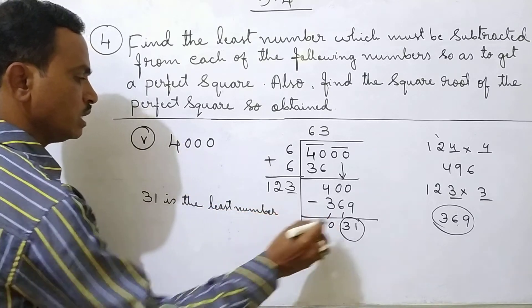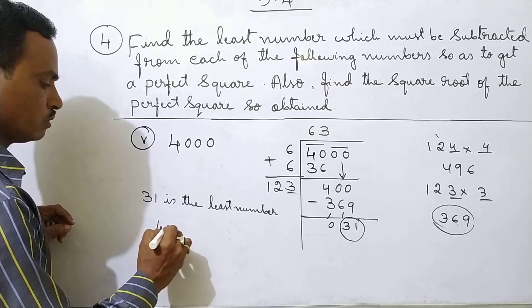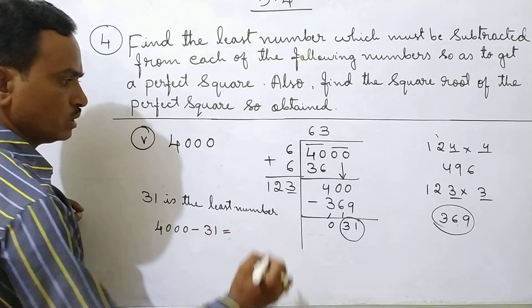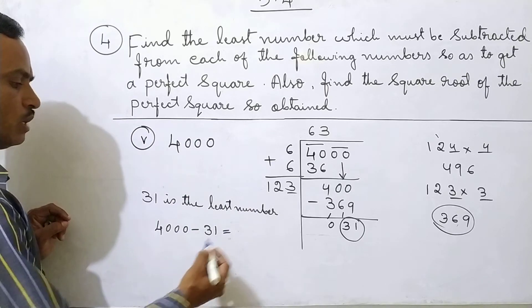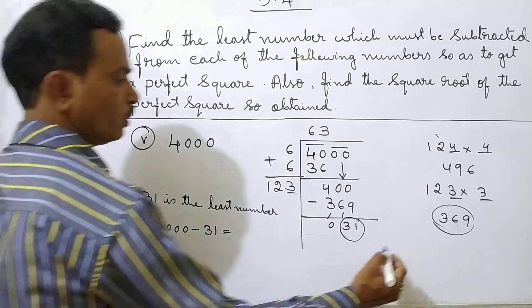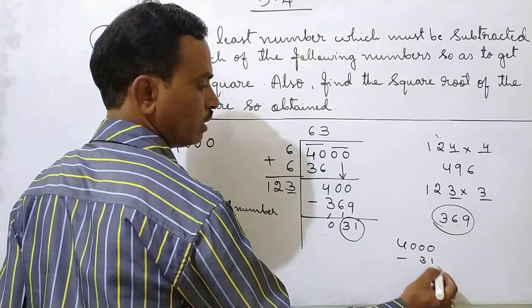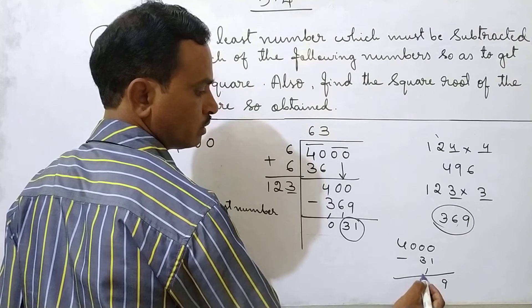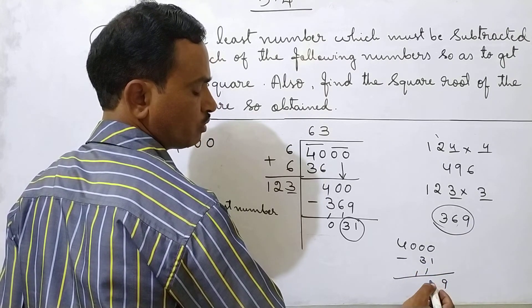So this least number you have to subtract from 4000. 4000. 4000 minus 31. So this is equal to. So what is the 4000 minus 31? We'll do 4000 minus 31. Carry 1. 10 minus 1 is 9. Again carry 1. 10 minus 3 plus 1 is 4.